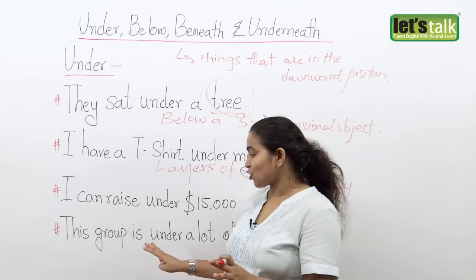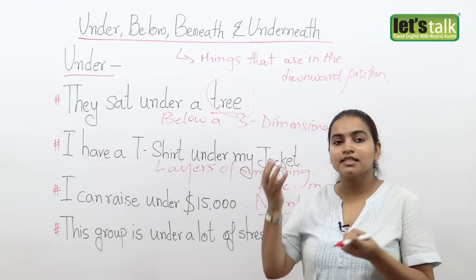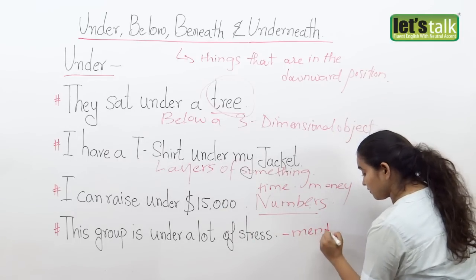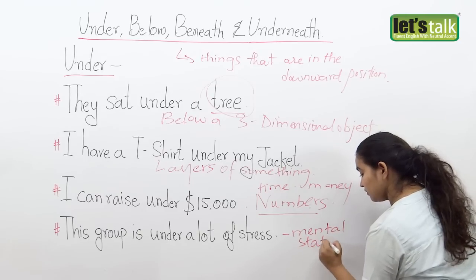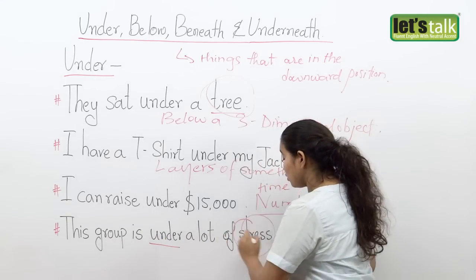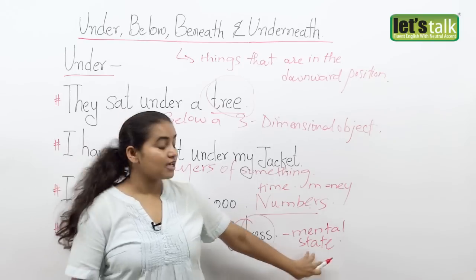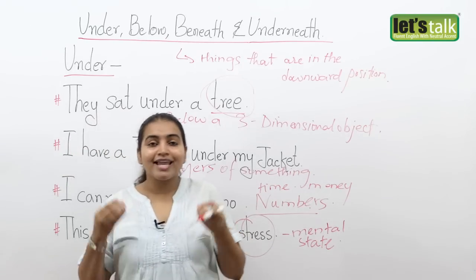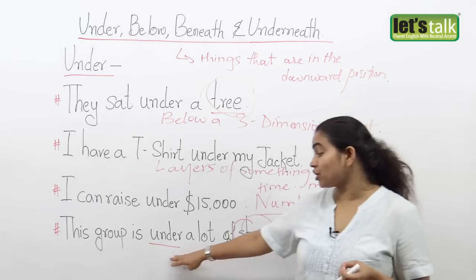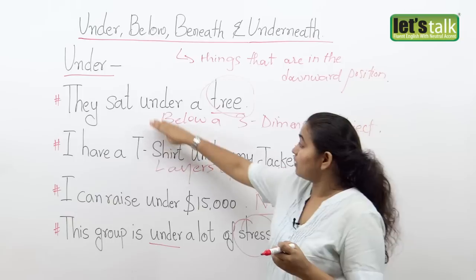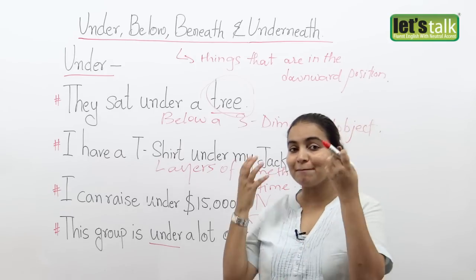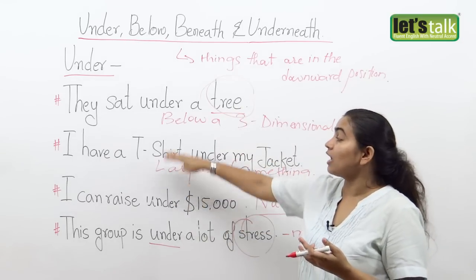The last context where you use the word under is to talk about a state of mental well-being or ill-being — so it talks about your mental state. I can say that this group is under a lot of stress, or I was under a lot of pressure. Please notice that unlike the previous examples, under here is talking about a mental situation, a mental state, and not a physical state.